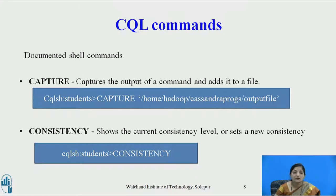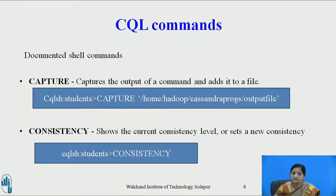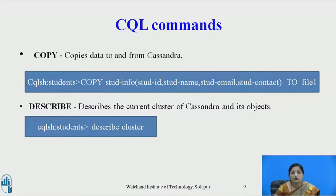Now let's see documented shell commands. Capture — this command captures the output of a command and adds it to a file; the output is stored into a file called output file. Consistency — this command is used to see the current consistency level or set a new consistency level. Copy — this command is used to copy data to and from Cassandra. In the example shown, student is the keyspace; the command copies student info — a table with four attributes: student id, student name, student mail and student contact — to a file known as file 1.